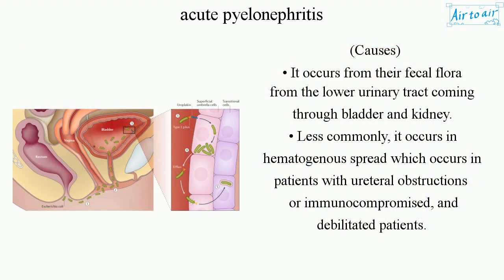Causes: It occurs from fecal flora ascending from the lower urinary tract through the bladder to the kidney. Less commonly, it occurs via hematogenous spread, which occurs in patients with ureteral obstructions, those who are immunocompromised, and debilitated patients.